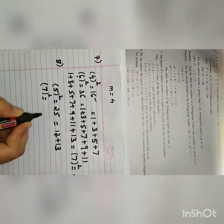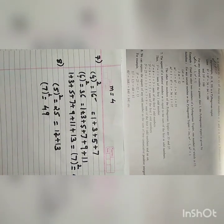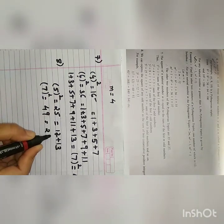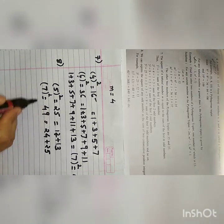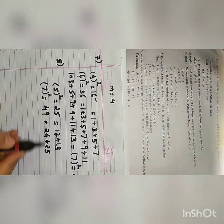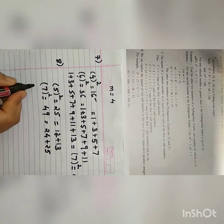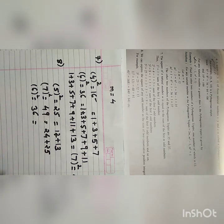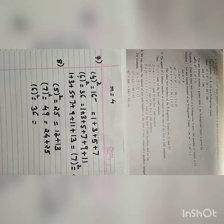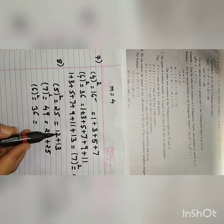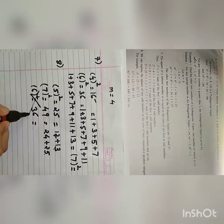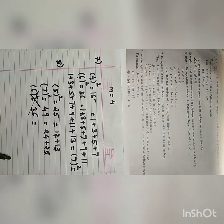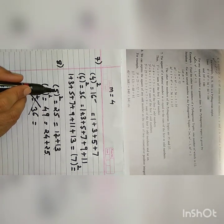This property is only for odd numbers — it is not true for even numbers. If I try with 6 square equals 36, it is not possible to write 36 as the sum of 2 consecutive positive integers. You could write 32 plus 4, but that is not a consecutive positive integer — consecutive means one after another. So this property can only be expressed for the square of any odd number, not even numbers.